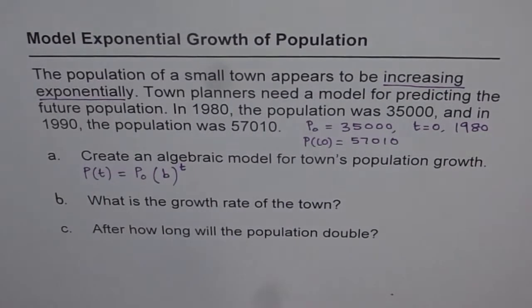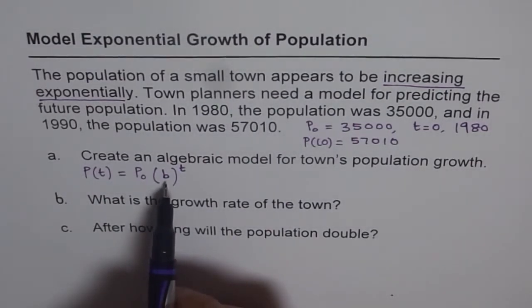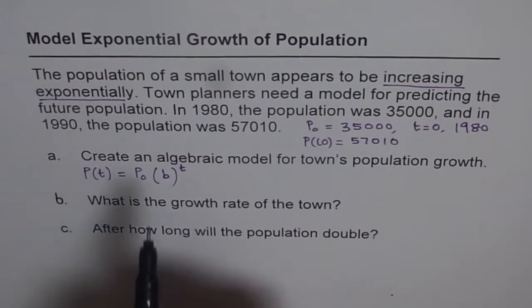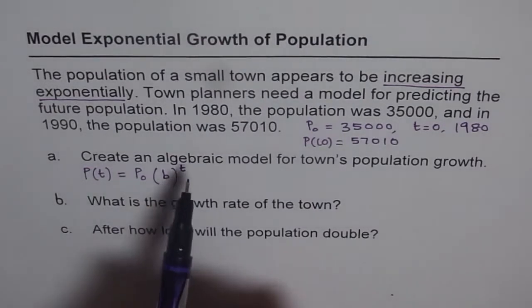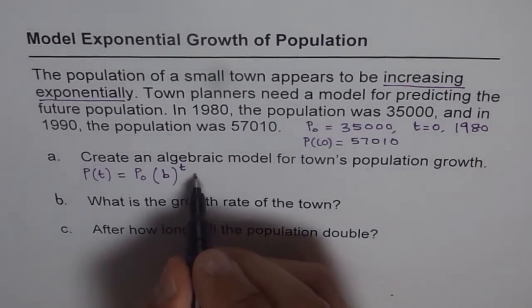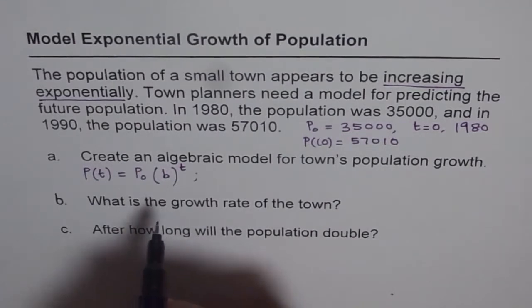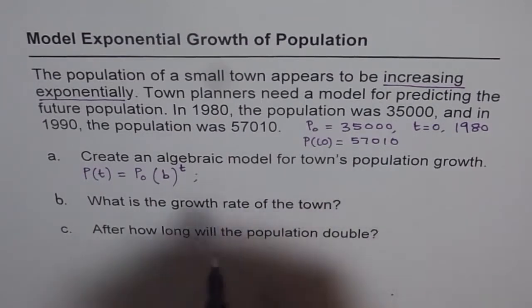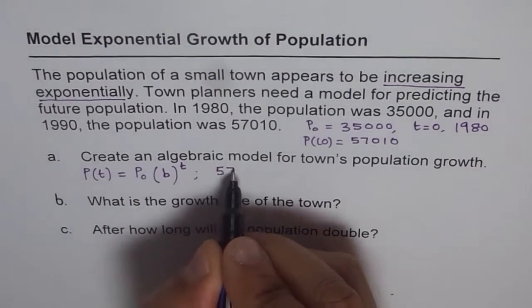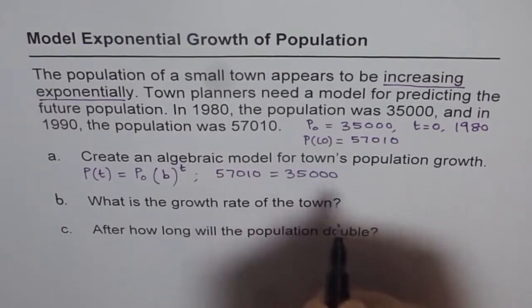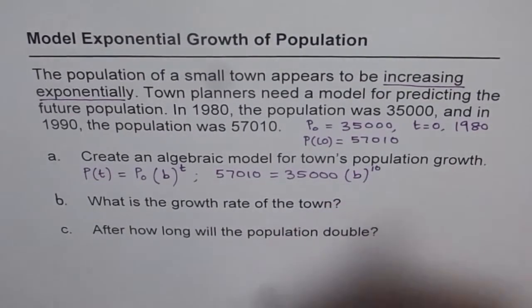Now in this equation we do not know what growth factor is. To find growth factor we can utilize the values given to us. So what is given to us is initial population P0 and population after 10 years. That should help us to find the value of b. So let us substitute those values. P(t) is 57,010. P0 is 35,000. B is not known to us and t is after 10 years.